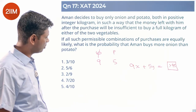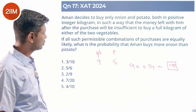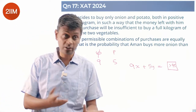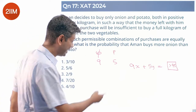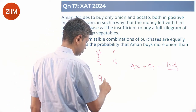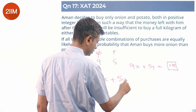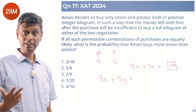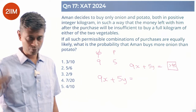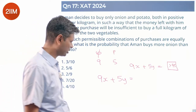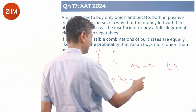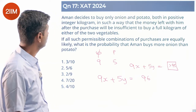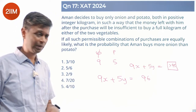The question asks: if all such permissible combinations of purchases are equally likely, what is the probability that Amand buys more onions than potatoes? So 9x+5y can equal 96, 97, 98, 99, or 100. Let's try solving for one — say 9x+5y = 96.